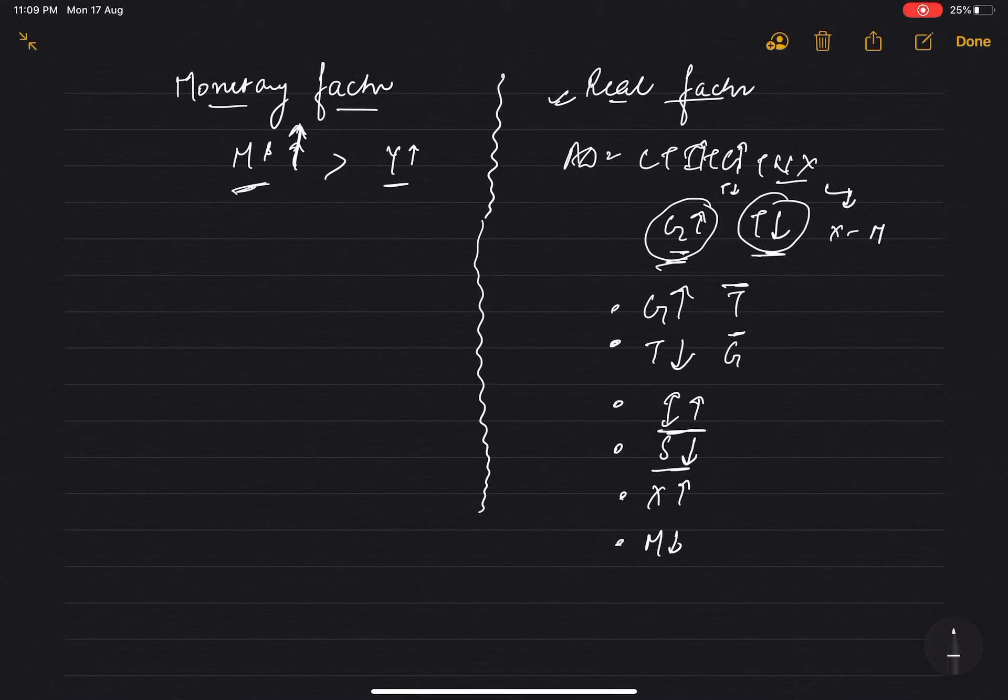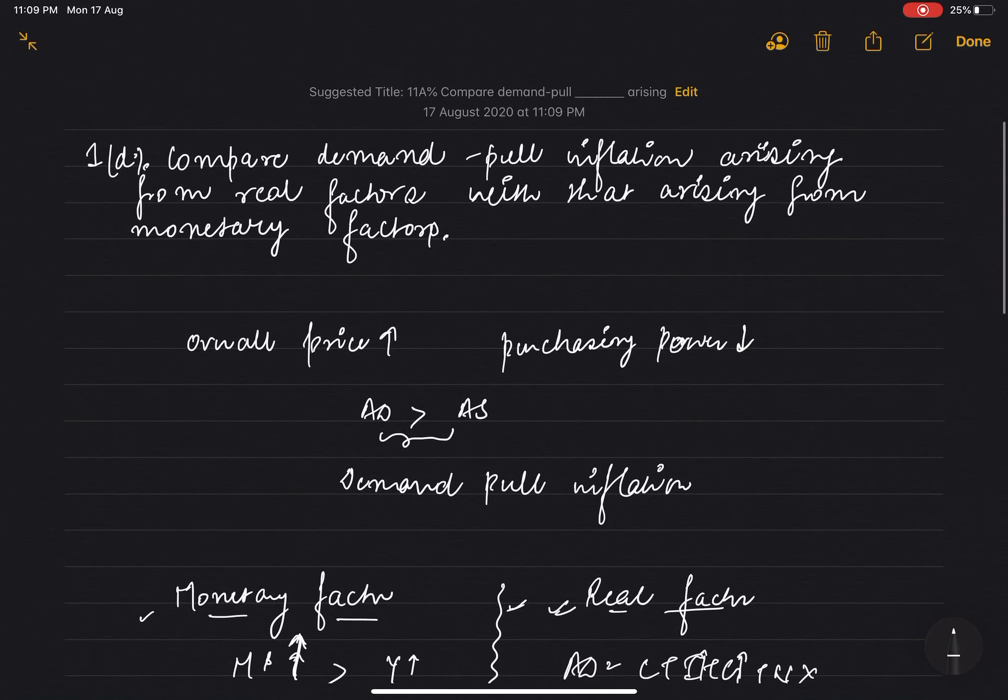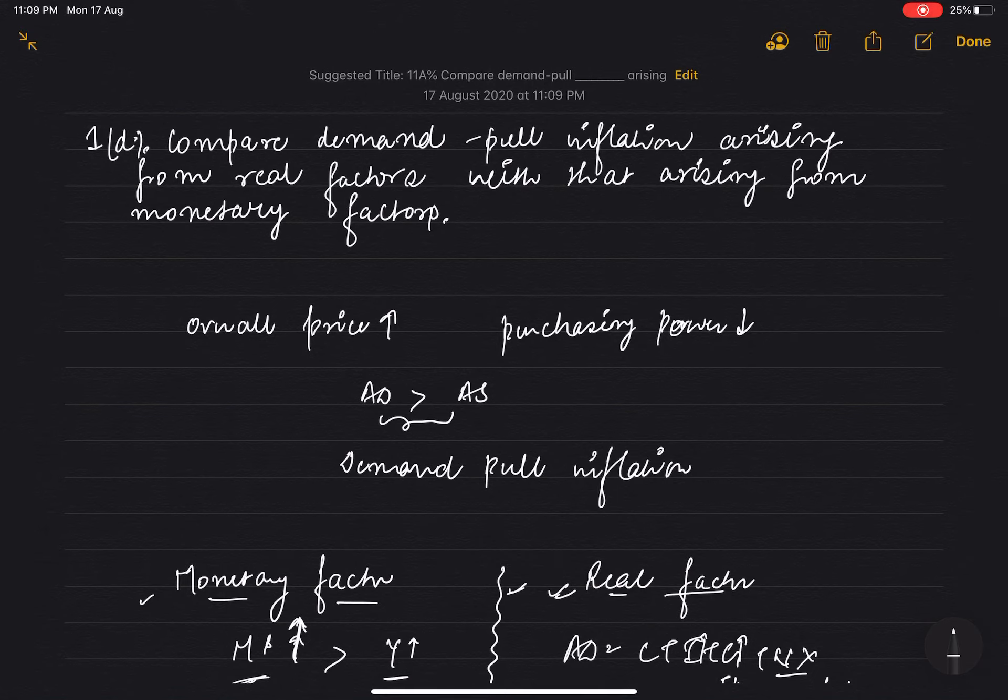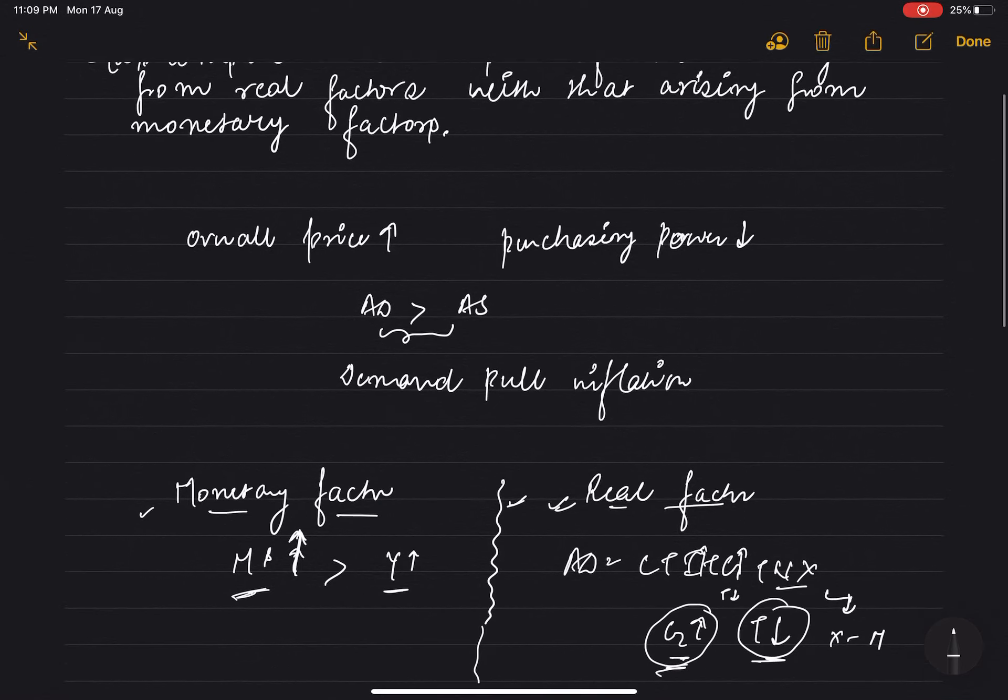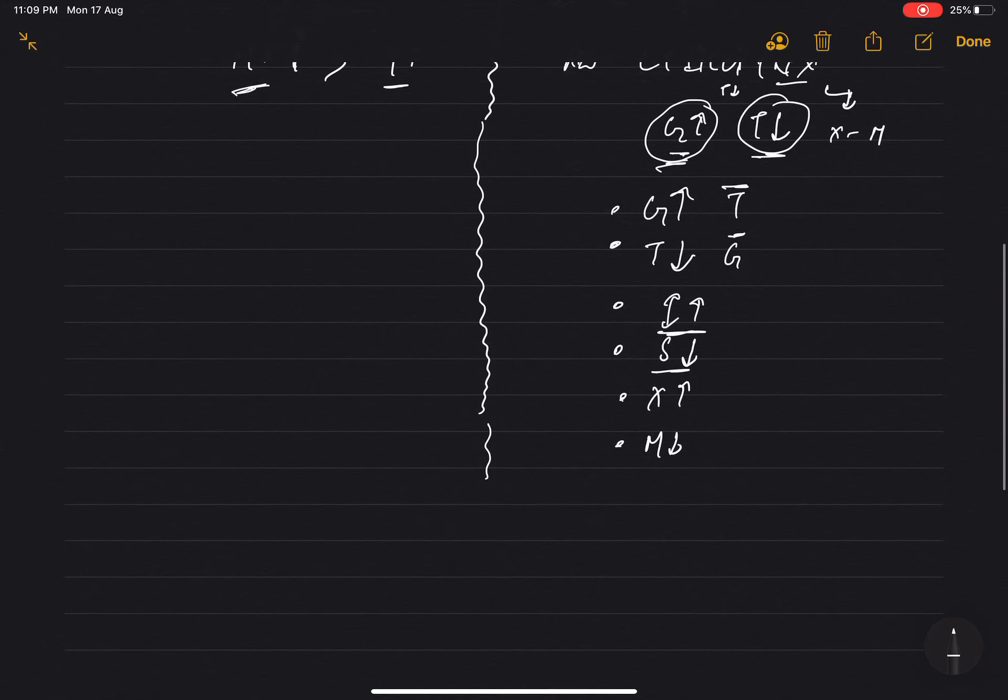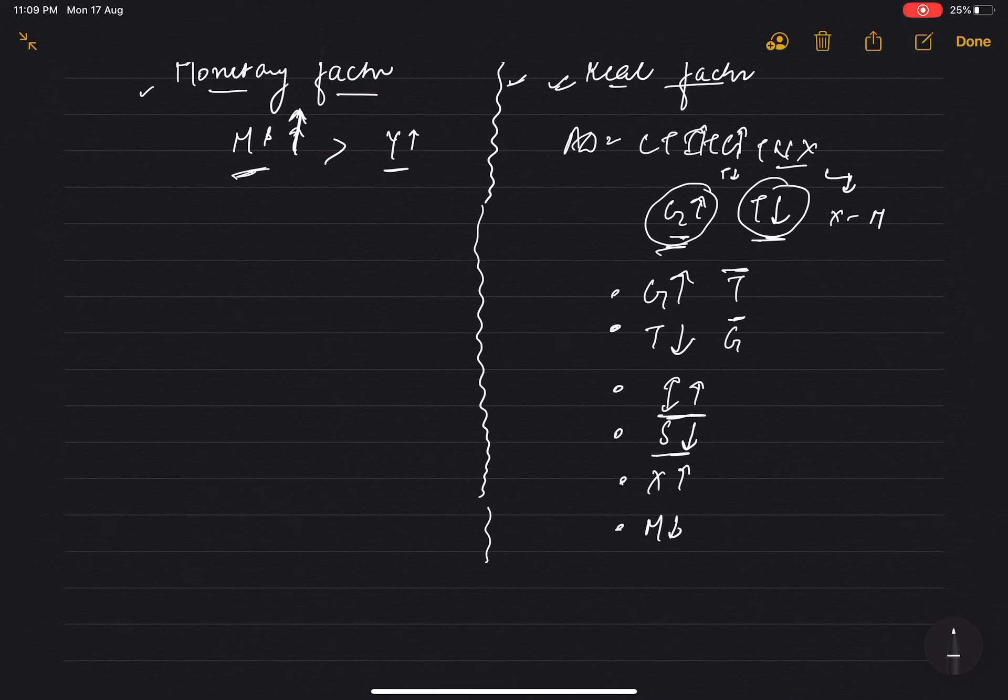These are the few factors - real factors and monetary factors that cause changes. When we compare both, you'll understand what demand pull inflation due to real factors is. We will be studying six factors: G, T, investment, spending, exports, imports. Out of all six factors discussed, the first four factors will result in increase in the level of disposable income.